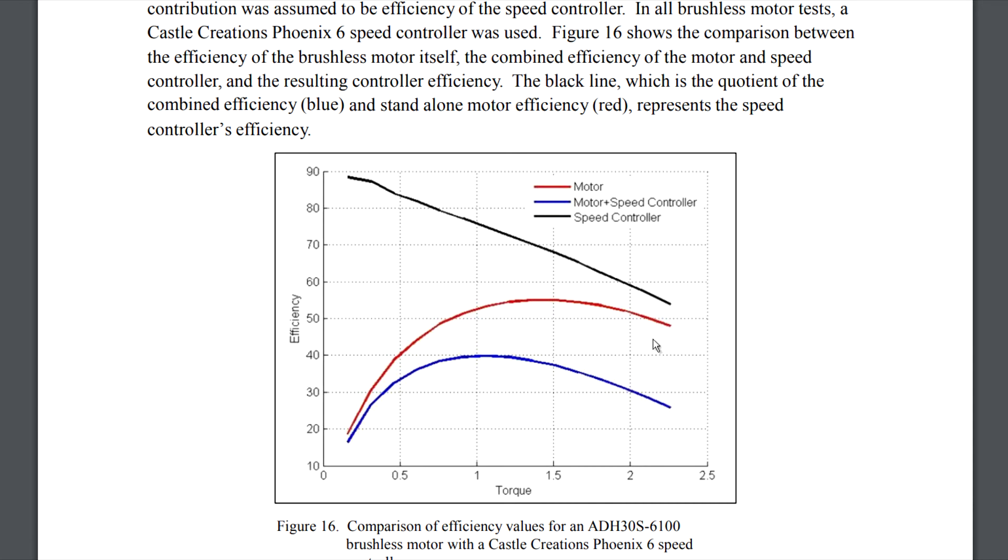But at high torque values, it drops down to nearly 50%. So that's a huge hit in efficiency at high torque outputs on the speed controller. And then this middle red line here is where they're pegging the efficiency of just the motor alone. And then the total efficiency of the system is this blue one. So you see the motor itself is capable of about 50% efficiency here at this high torque value.